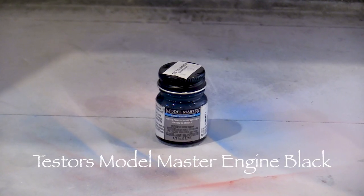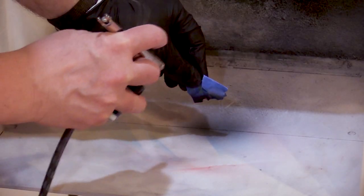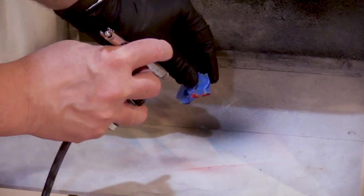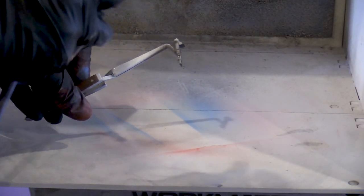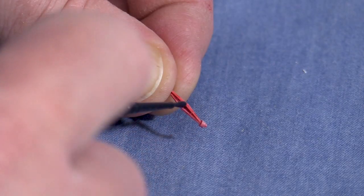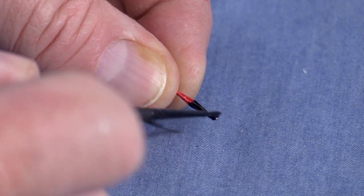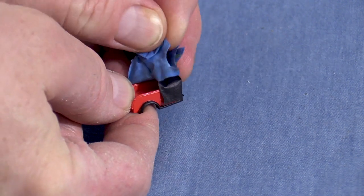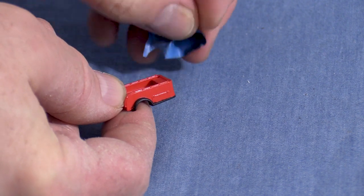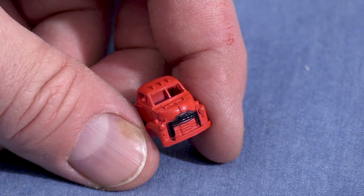I'm using some Testers Model Master Flat Black Acrylic in my airbrush. I decided that the boom should be black as well. I like to remove the masking tape as soon as possible after painting. It looks like it worked pretty well.